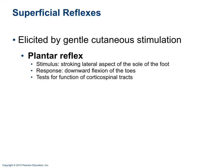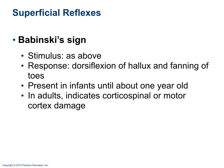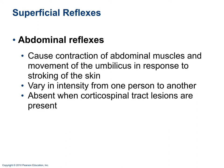The plantar reflex: stroking the lateral aspect of the sole of the foot should cause downward flexion of the toes in an adult. This tests the corticospinal tracts; absence of this reflex may indicate damage to those tracts. In infants up to about one year old, the same stimulus produces the Babinski sign — dorsiflexion of the big toe and fanning of the other toes — which is normal in infants but indicates corticospinal or motor cortex damage in adults. The abdominal reflex causes contraction of abdominal muscles and movement of the umbilicus in response to stroking of the skin; absent reflexes could indicate corticospinal tract damage.